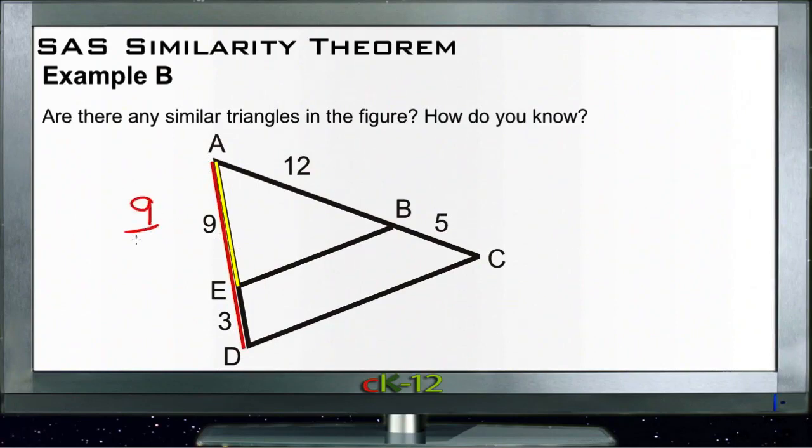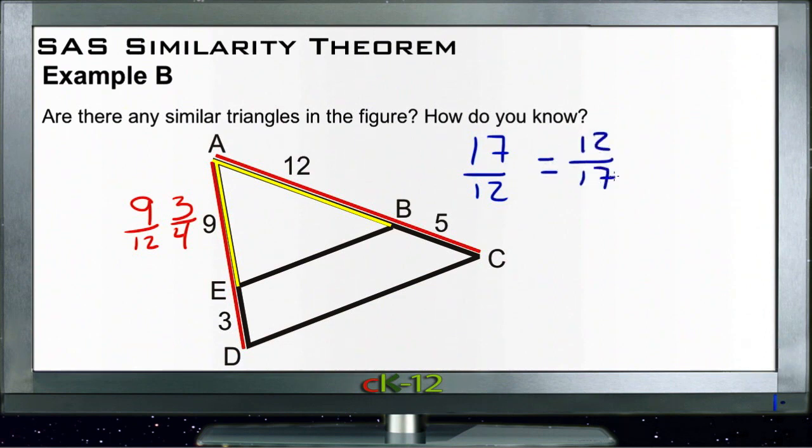So that says that this side over here has a ratio of 9 to 12, which would be 3 to 4, yeah. Then the other side over here, the long one, has a length of 17, and the short one has a length of 12. So we have 17 to 12. Yeah, did that with the yellow again, that just doesn't work does it? There we go. 17 to 12. 12 to 17 or 17 to 12 doesn't reduce.